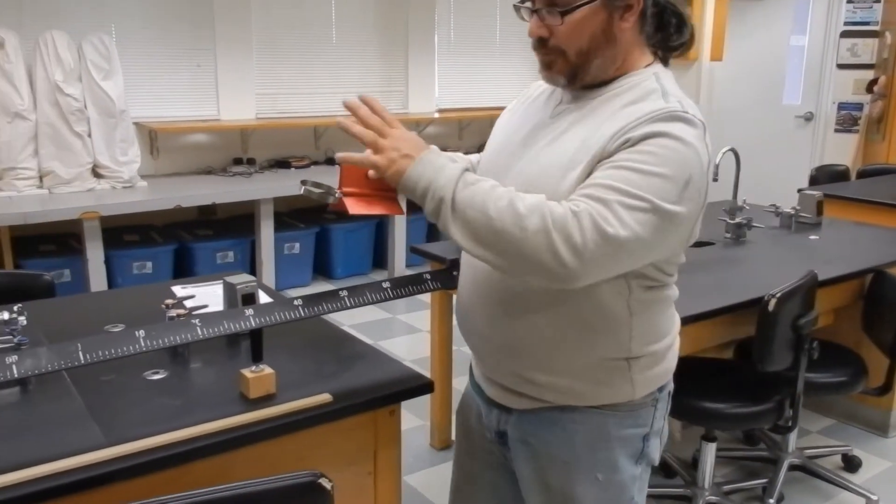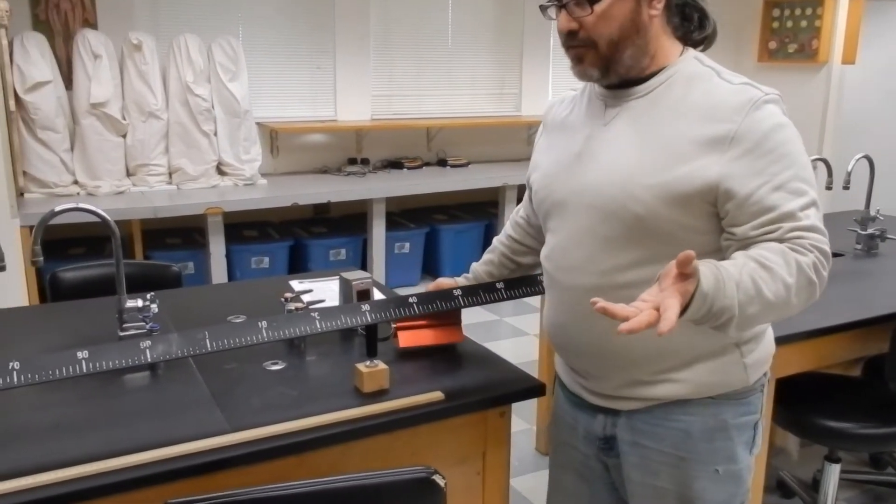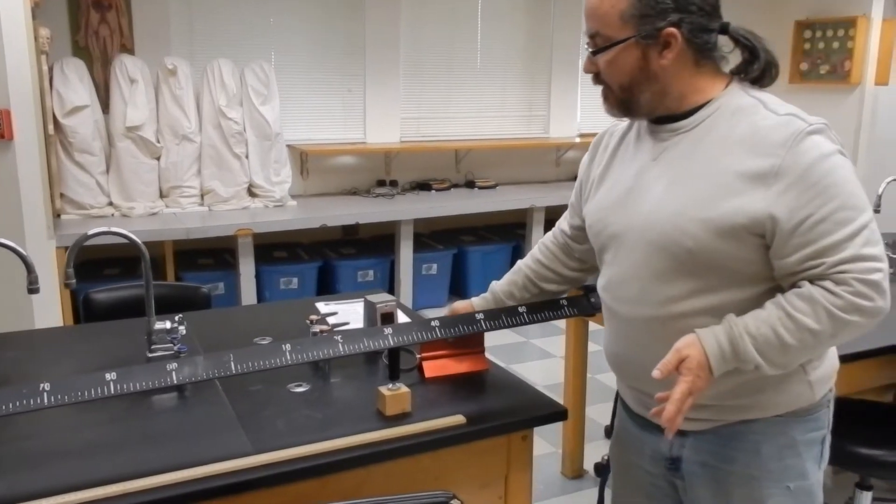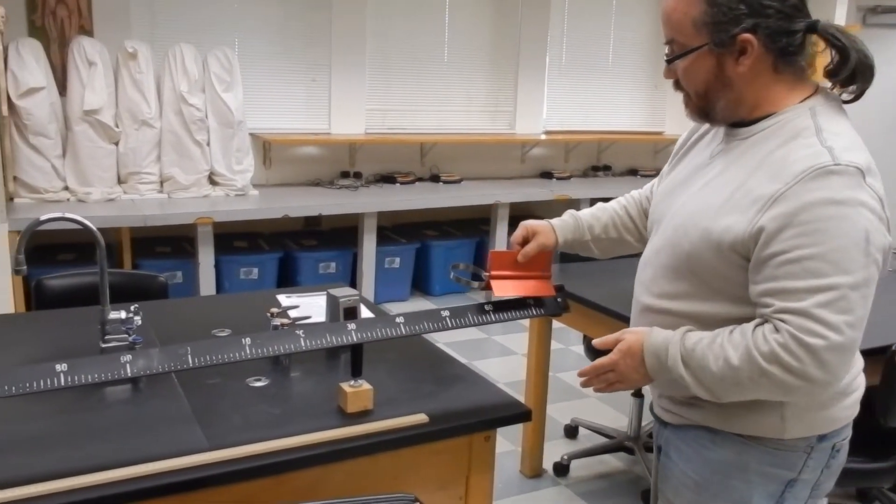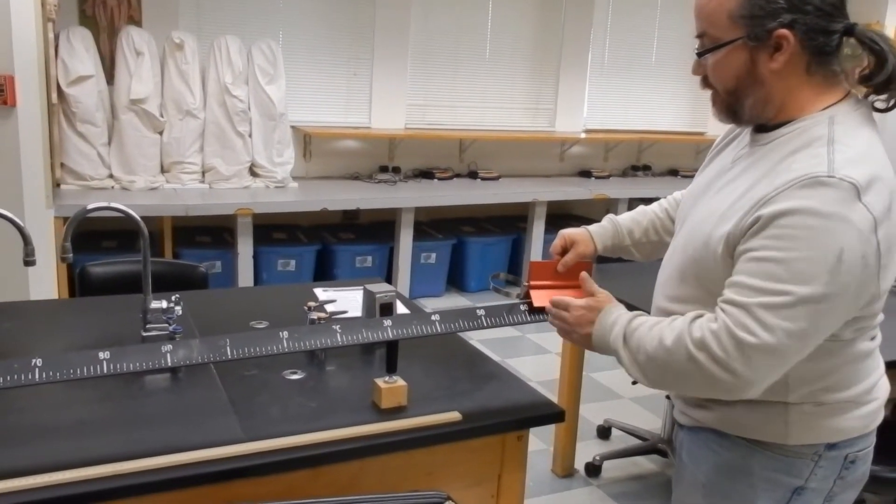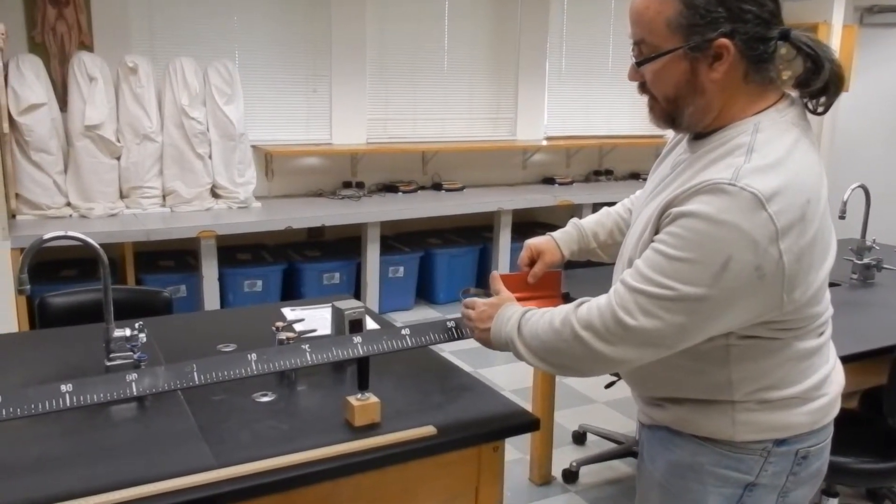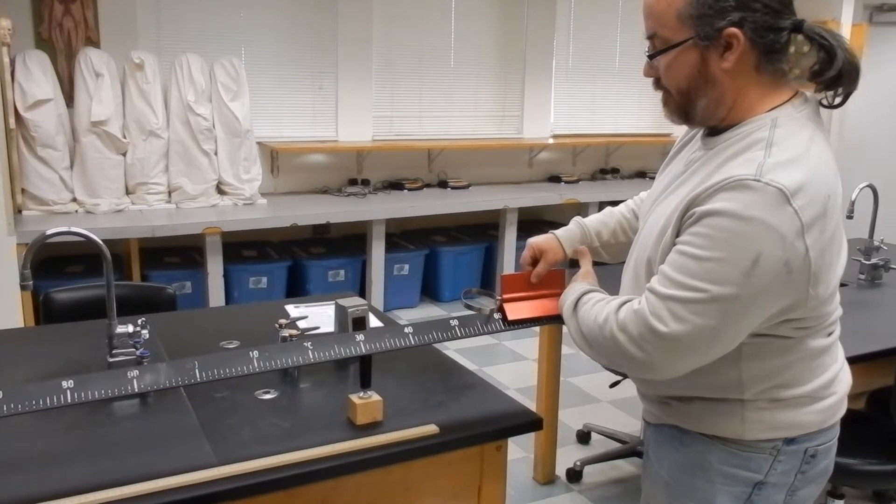What I'm going to do is turn on the air track. It's going to be loud, it's going to sound like a vacuum cleaner. Then I will place this glider at the end as far to the edge as I can. The bumper here, the edge of the bumper, will represent the location of the glider.